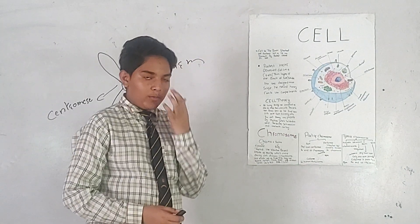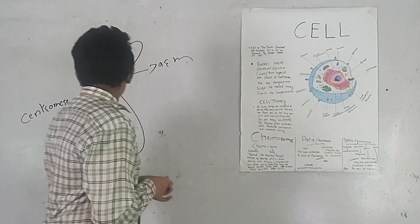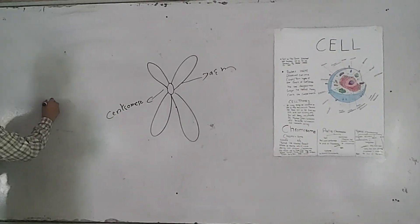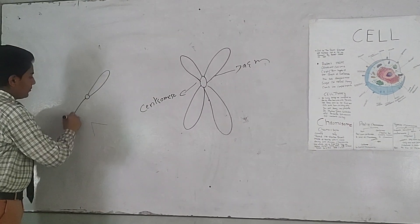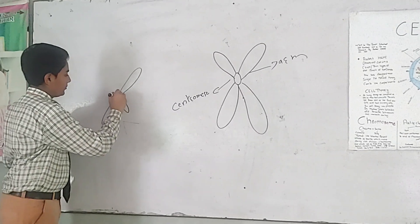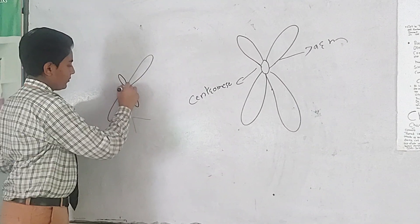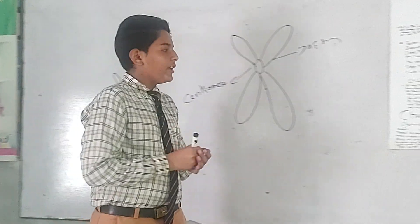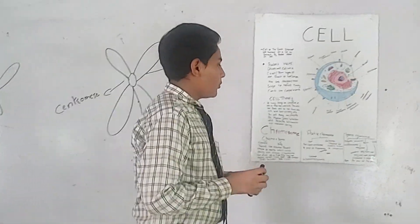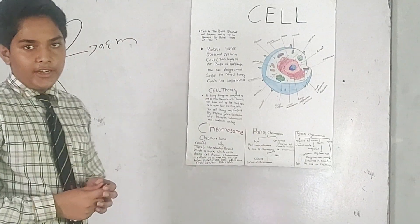Acrocentric is a type of chromosome in which there is one big arm and one small arm. Now we are coming to the last type of chromosome that is Telocentric.